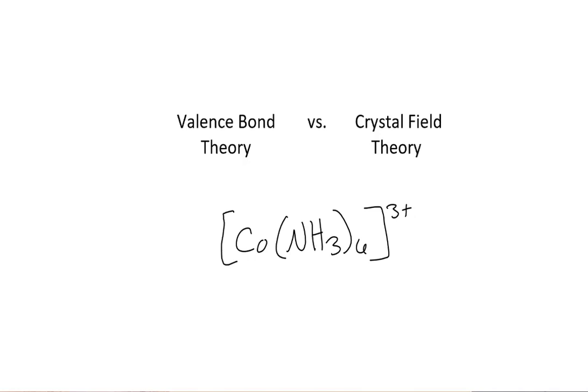Hey guys, it's Ischel Perez. Today we'll be comparing the valence bond theory diagram as well as the crystal field theory diagram. For today's example, I will be using hexamine cobalt three ion, or CO NH3 6 3 plus ion.